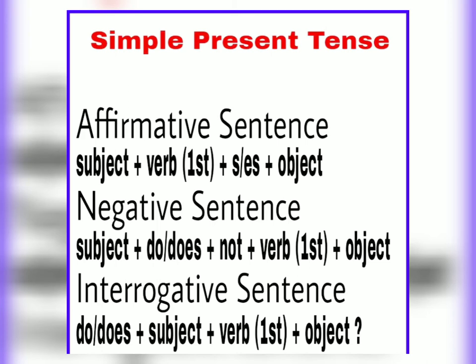There are three types for the present indefinite tense. First are affirmative sentences, also called simple or positive sentences, where you talk about general things positively without using negative words or questions. The structure is: Subject + Verb (first form) + s/es + Object. The subject is the person or thing that performs an action. The verb is the action happening in the sentence. The object is the person or thing receiving that action.